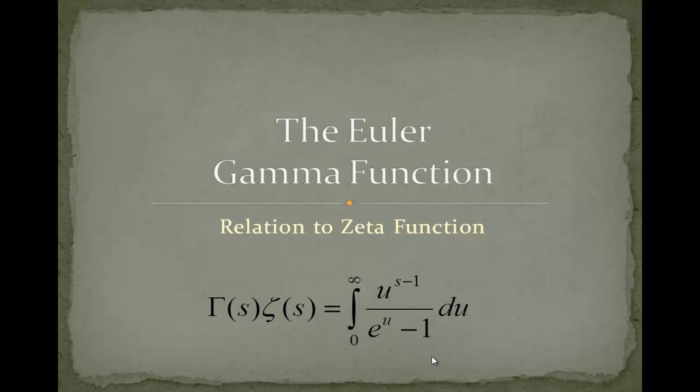Hello and welcome to my new video on the gamma function. In this special video we will derive the relationship to the zeta function, which you can see below the gamma function: the gamma function multiplied with the zeta function is equal to this integral from 0 to infinity of u to the s minus 1 over e to the u minus 1.